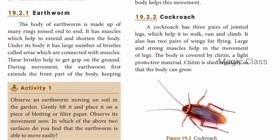Next is cockroach. A cockroach has three pairs of jointed legs which help it to walk. It also has two pairs of wings — cockroaches have wings for flying.